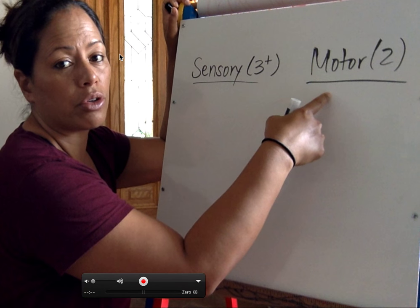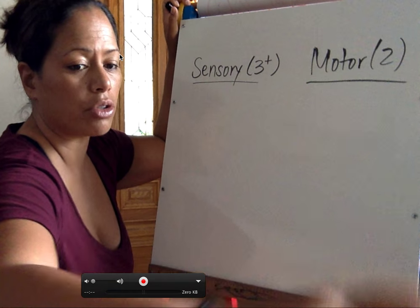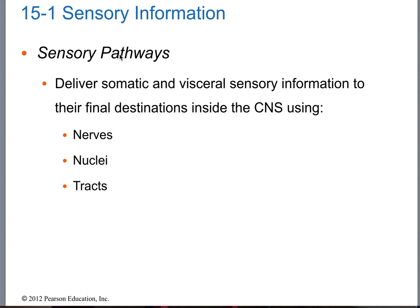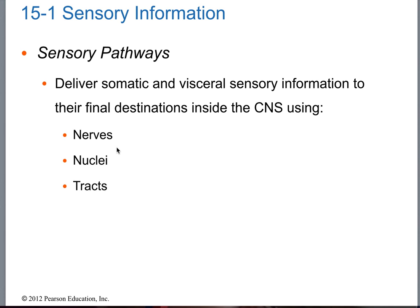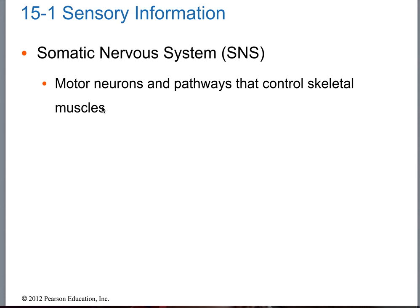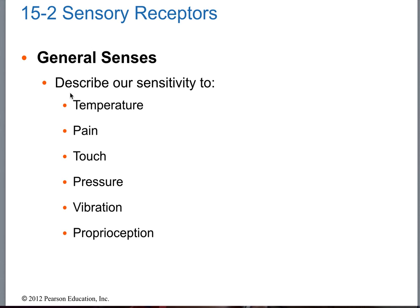Motor is divided into upper motor neuron and lower motor neuron. Somatic motor — this is MEV. General sensation — this is SAD. SAD is ascending information, the type of information ascending to the brain: temperature, pain, touch, pressure, vibration, proprioception. We're going to memorize all of these for the two different pathways.